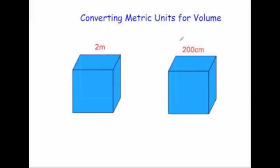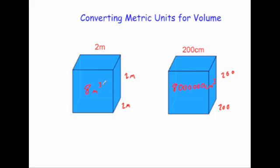Let's just check it with another pair of cubes. Here we've got two meters, so two times two times two equals eight meters cubed — remember two times two is four, times two is eight. This one would be 200 times 200 times 200, which is eight followed by six zeros: eight million centimeters cubed. Again, you can see the conversion rate of one meter cubed equals one million centimeters cubed.